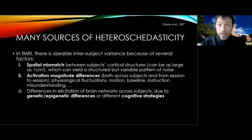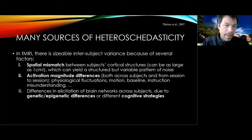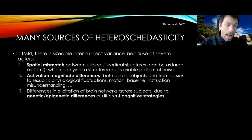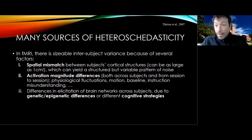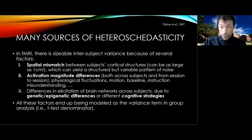Similarly, you can get systematic differences in activation magnitude, both across participants and across different sessions of the same participants if you're doing a repeated design. This could be due to physiological fluctuations, motion, baseline shifts, or if your participant misunderstands your instructions or doses off. Finally, you can get differences in the elicitation of brain networks across subjects due to genetic or epigenetic differences or different cognitive strategies. These all end up being modeled as the variance term in your group analysis — the denominator of your t-test — which is why these issues become very problematic.